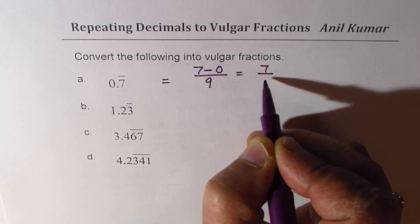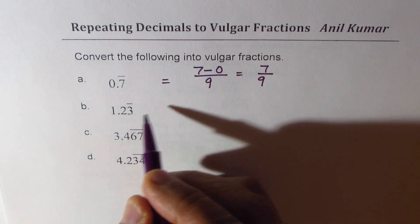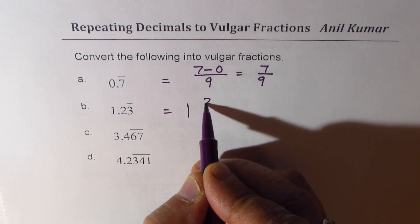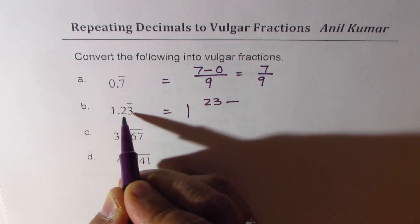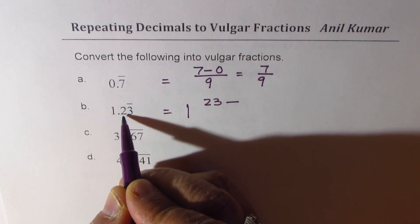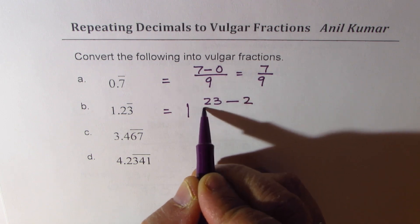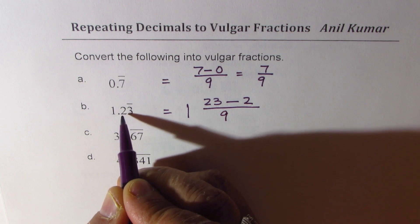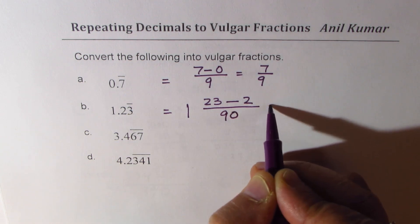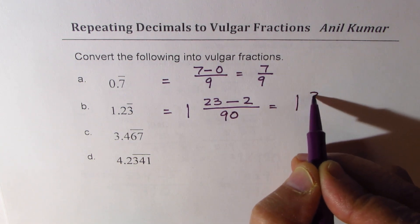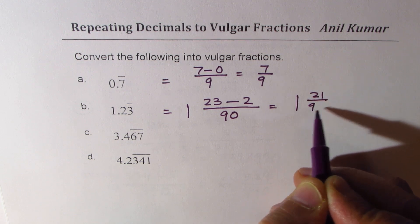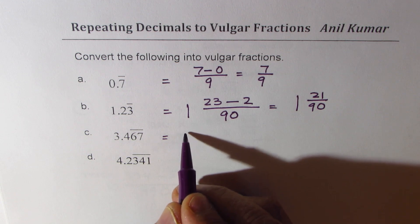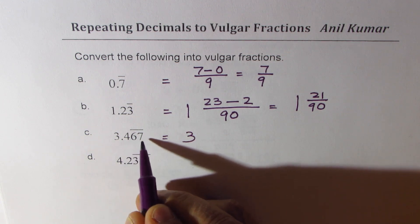Now here 1 whole. So we have 23, from 23 we have to subtract the number which is not being repeated which is 2 and divide by 3 recurring means 9 and 2 is not recurring 90. So we get this as 1 and 21 over 90 as our answer. Now here 3 wholes. 467, so we'll do 467 take away what is not repeating - 4 is not repeating, divided by 67 is repeating so we'll write 99 for 67 and 10 for 4. So what we get here is 3 and the numerator should be 463 divided by 990.